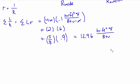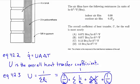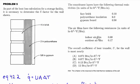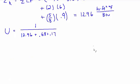So to put it all together, let's now find U total. It's going to be 1 over all these resistances. So that's 12.96 plus these numbers we were given here, 0.68 and 0.17. And because all of these now have units of hour foot squared degrees F over BTU, you can check that. They can be added together.